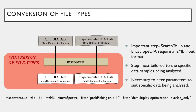As previously mentioned, the first step of the Encyclopedia workflow is the conversion of files from .raw file type to the .mzml file type, which is an important step as Search2LIB and Encyclopedia both require .mzml input file types. While file type conversion is the simplest step, it is also the step that is most tailored to the data input. More specifically, the parameters used by msconvert to convert the files will vary between different input data samples and need to be set by the user accordingly.